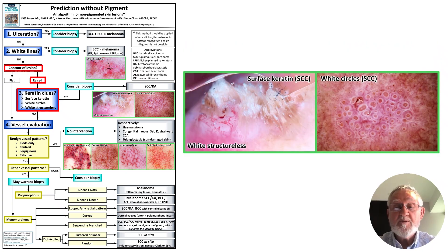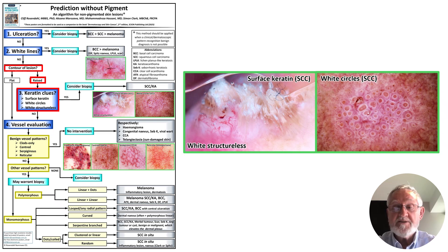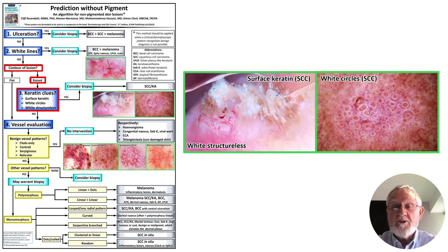The third step only applies to lesions which are raised — either elevated by visual contour or by palpation — because surface keratin and white circles can also occur in the benign lesion of actinic or solar keratosis. So these clues lead to excision biopsy only if the lesion is raised. The three keratin clues are surface keratin, white circles, and a white structure surface area.